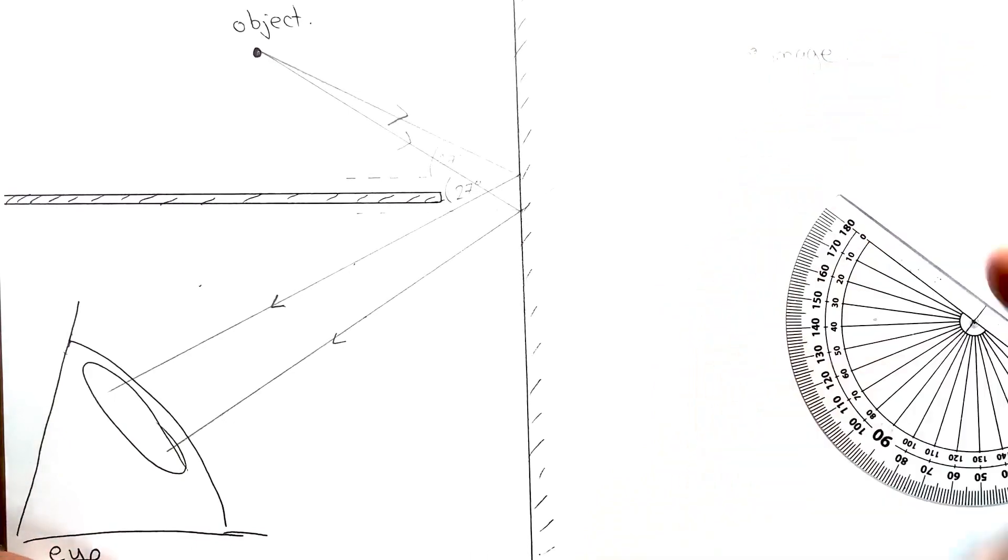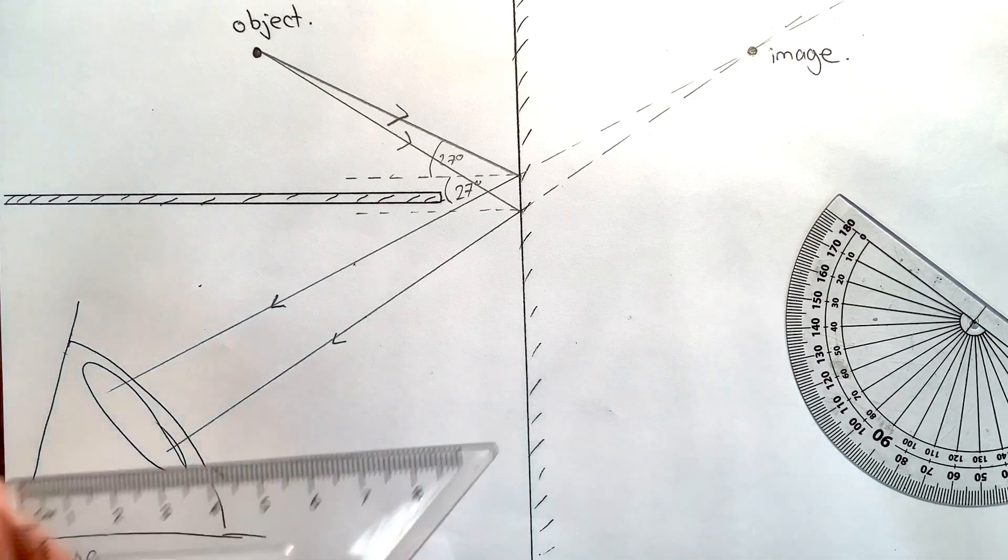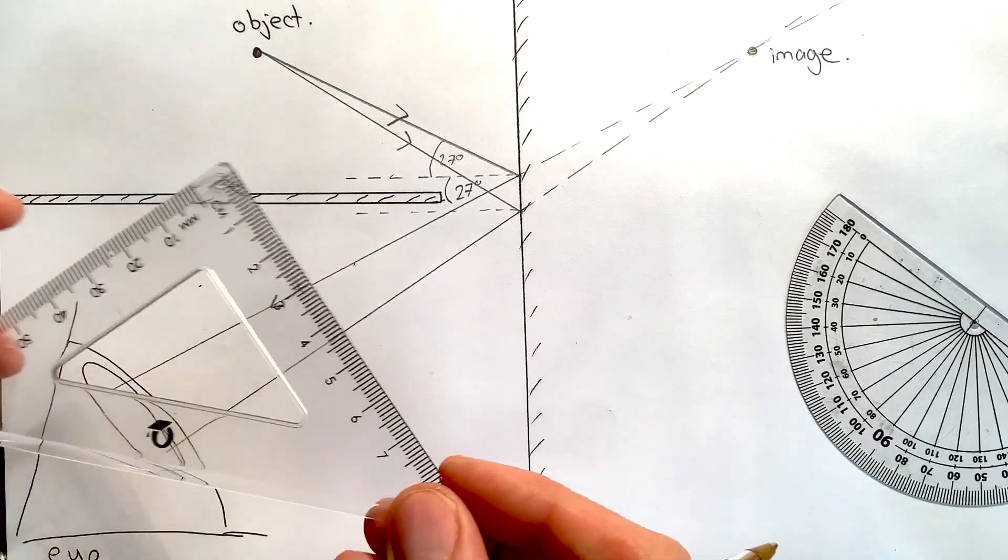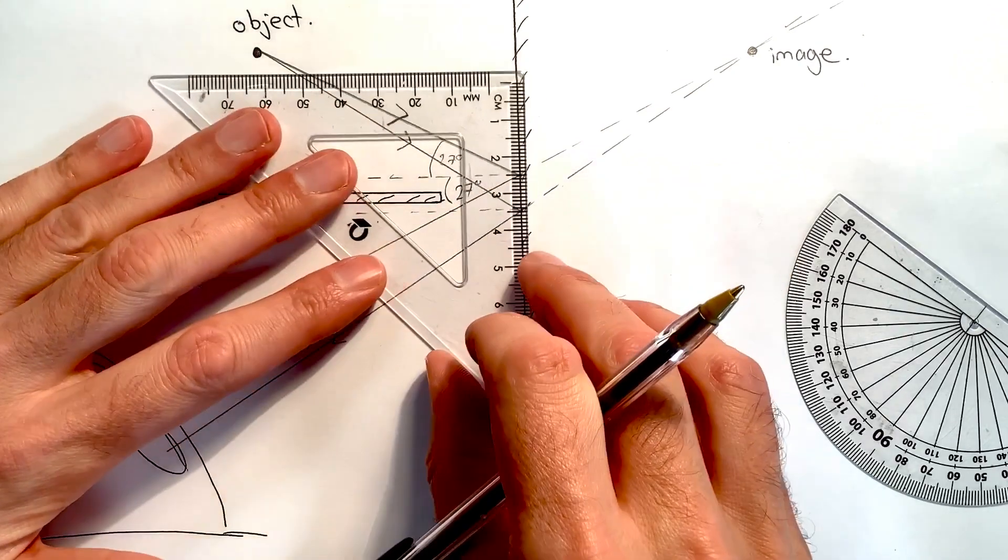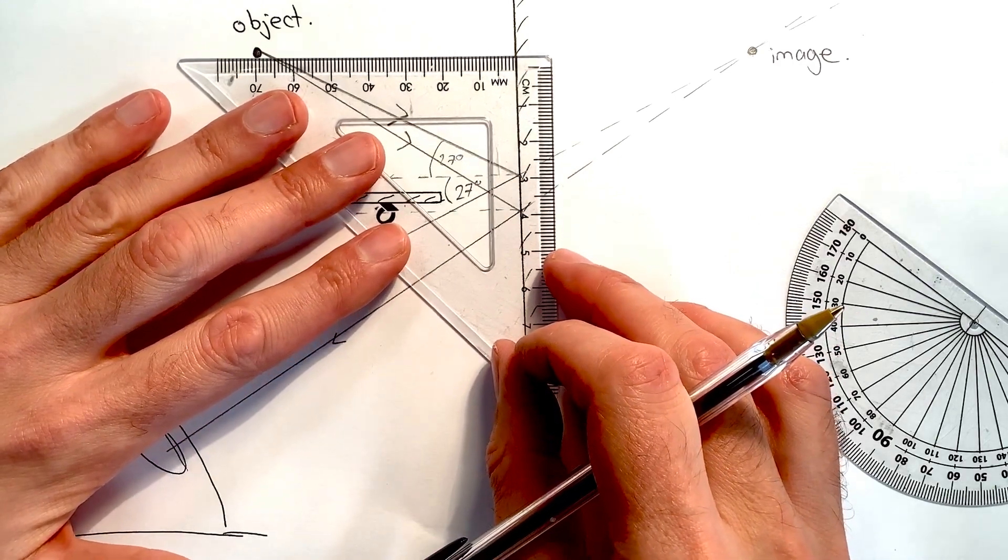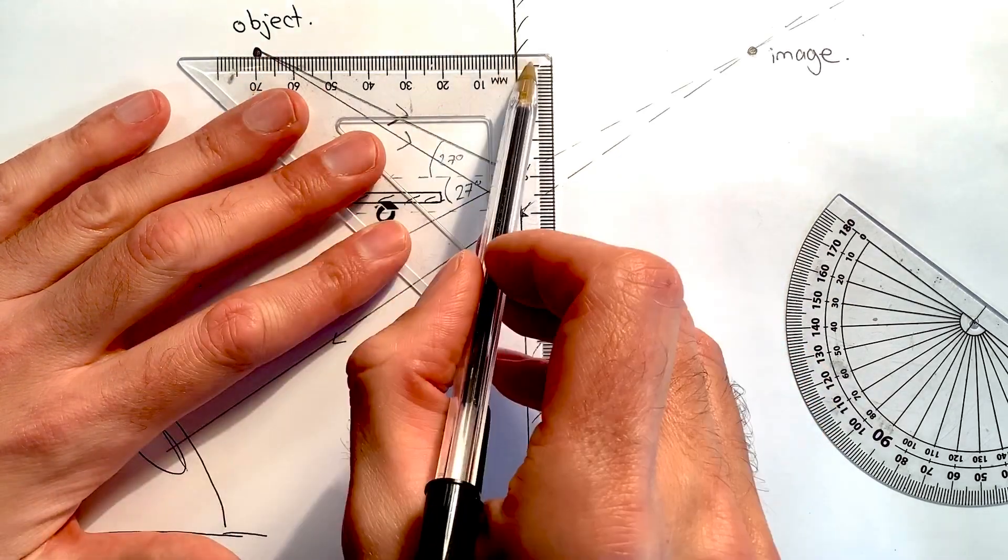And if I've done this correctly, then I should find that the image is the same distance behind as the object is in front. So let me just check that. So with my set square reasonably well lined up, I can see that that is seven centimeters in front.